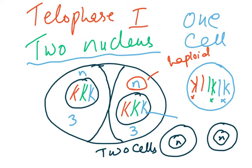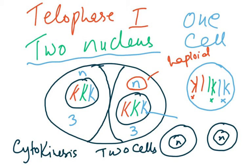We say cytokinesis has taken place, which is not part of nuclear division, because prophase, metaphase, anaphase, and telophase are the parts of nuclear division.